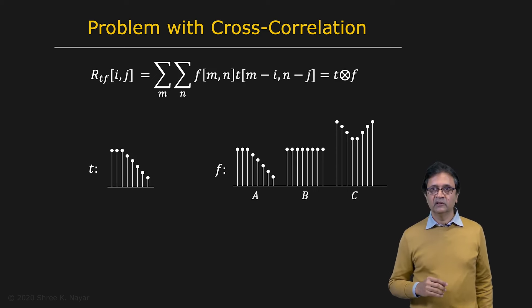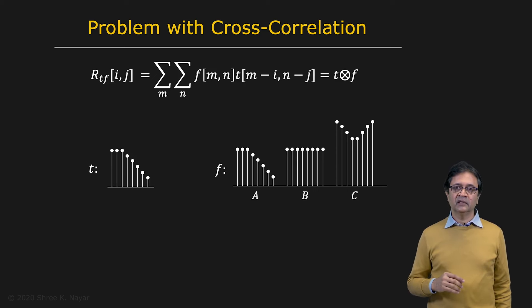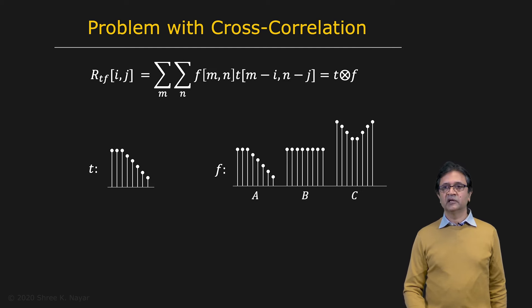So now let's take a look at cross correlation and a problem that we have to deal with. Imagine, and we'll take the example of a 1D signal. So this is your 2D expression for cross correlation. And let's say that we look at this 1D example, where this is the template given to you, and this is the image that's given to you. Clearly, we want to find the point A.